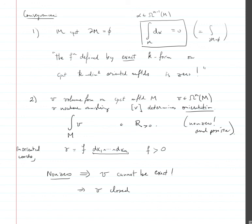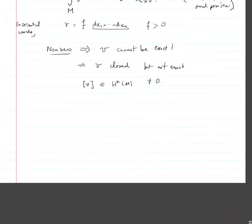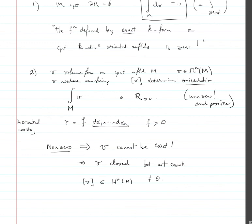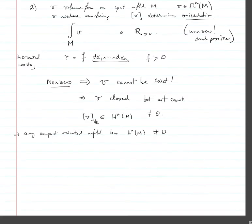So v is closed — it's obviously closed because any n-form is closed, since d of it would be an n+1 form — but not exact. This means v has a non-zero class in the de Rham cohomology H^n(m). So any compact oriented manifold has non-zero top cohomology H^n(m).